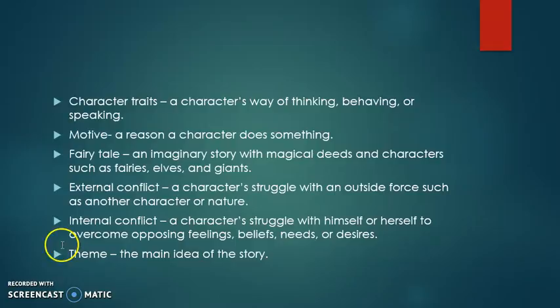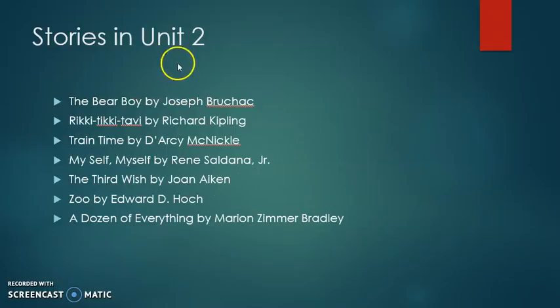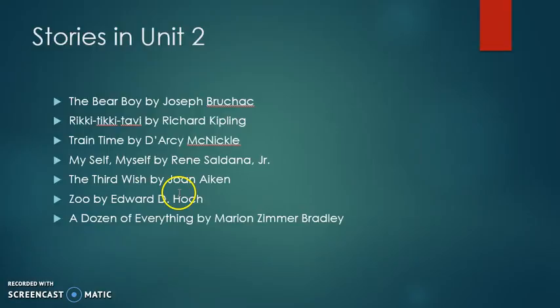And once again, theme — you hear theme a lot in this unit. It is the main idea of the story. Some of the stories that we're going to read in this unit are The Bear Boy by Joseph Bruchak, Rikki-Tikki-Tavi by Richard Kipling, Train Time by Darcy McNichol, Myself by Renee Saldana Jr., The Third Wish by Joan Aiken, Zoo by Edward D. Hoch, and A Dozen of Everything by Marian Zimmer Bradley. And that's the end of Unit 2.